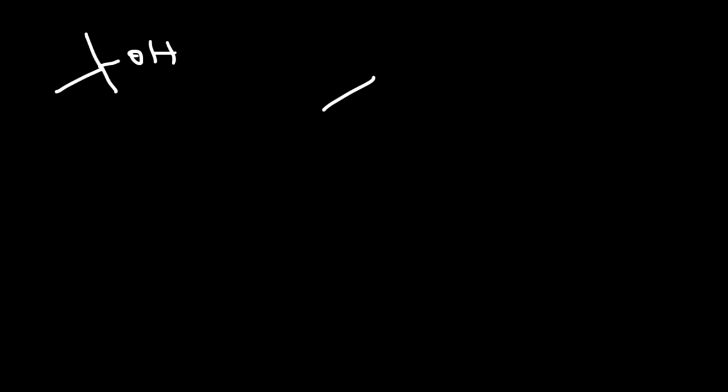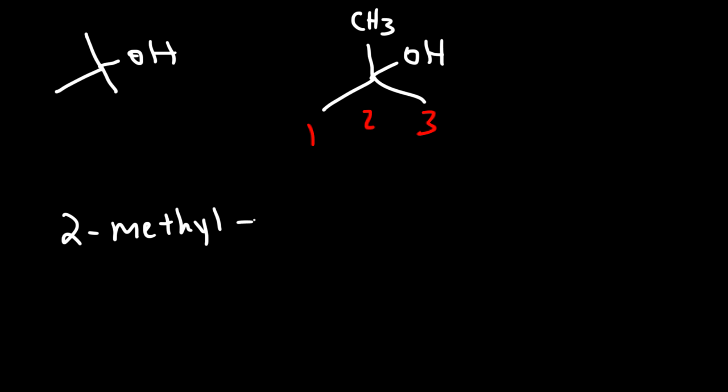Now let's focus on tert-butyl alcohol. I'm going to redraw it. We still have a three-carbon chain, but now we have the OH group on carbon two and also a methyl on carbon two. So this is going to be called 2-methyl-2-propanol. That is the IUPAC name for tert-butyl alcohol.